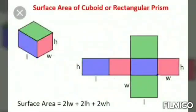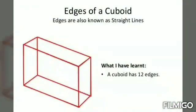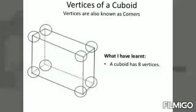A cuboid is made up of rectangles. It also has 6 faces, 12 edges and 8 vertices.